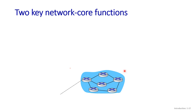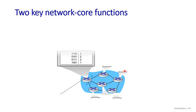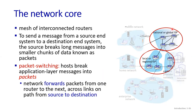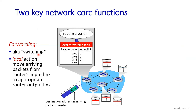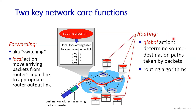There are two key network core functions. One is forwarding, also known as switching — it is a local function, local to the router. The other is routing, which is a global function. Let's understand switching first.